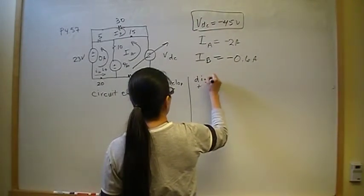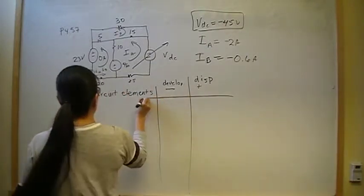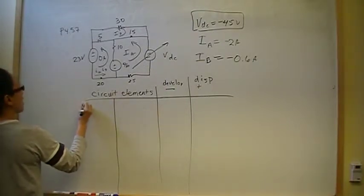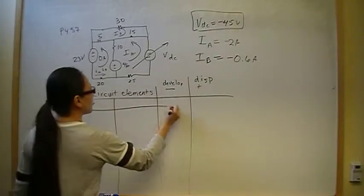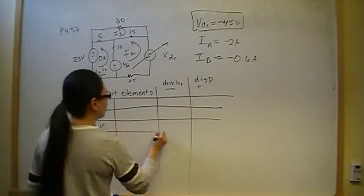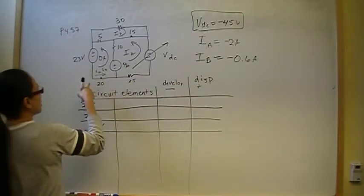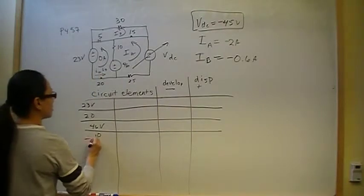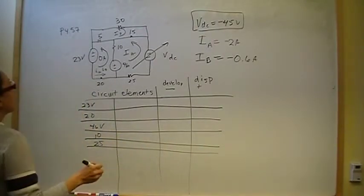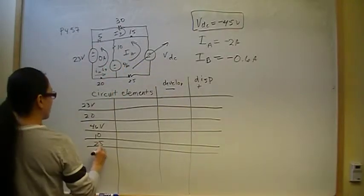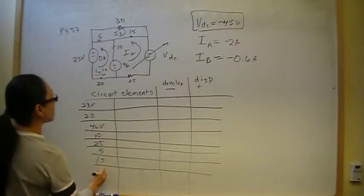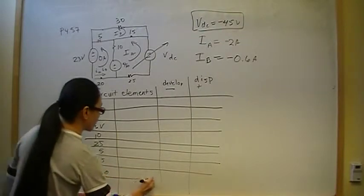For Part B, we need to prove our answer is correct by showing power dissipated equals power developed. If the power is negative, it's power being developed; if positive, it's power being dissipated. Let's make a table of all the circuit elements: 23V, 20Ω, 46V, 10Ω, 25Ω, 5Ω, 15Ω, 30Ω, and V_dc.